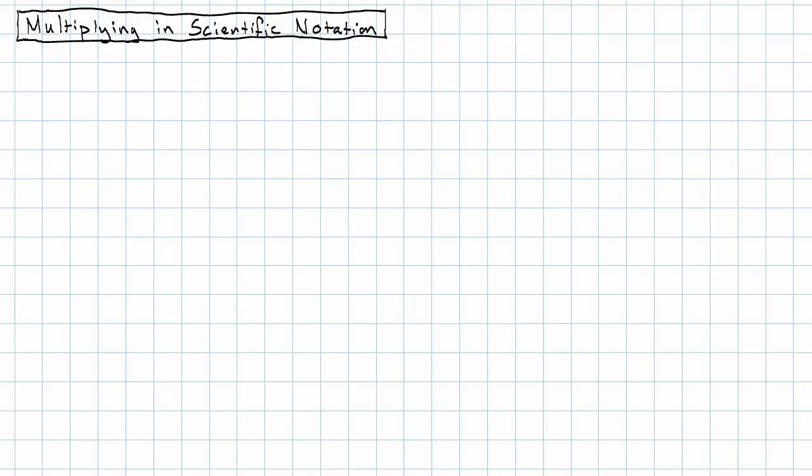What if we have two numbers in scientific notation and we want to multiply them together? Well, it turns out because of the way scientific notation is put together out of multiplication, that's very easy. Let me give a simple example.